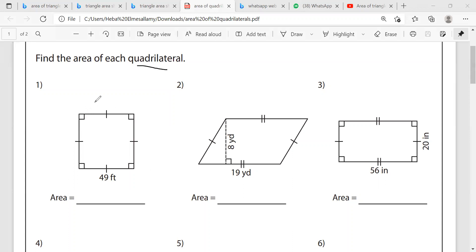First of all, here I have a square. The area of the square is length squared. So I'm going to say the area equals 49 squared, which is 49 multiplied by 49. Type it on the calculator and get the answer. And of course, the unit here is feet squared.